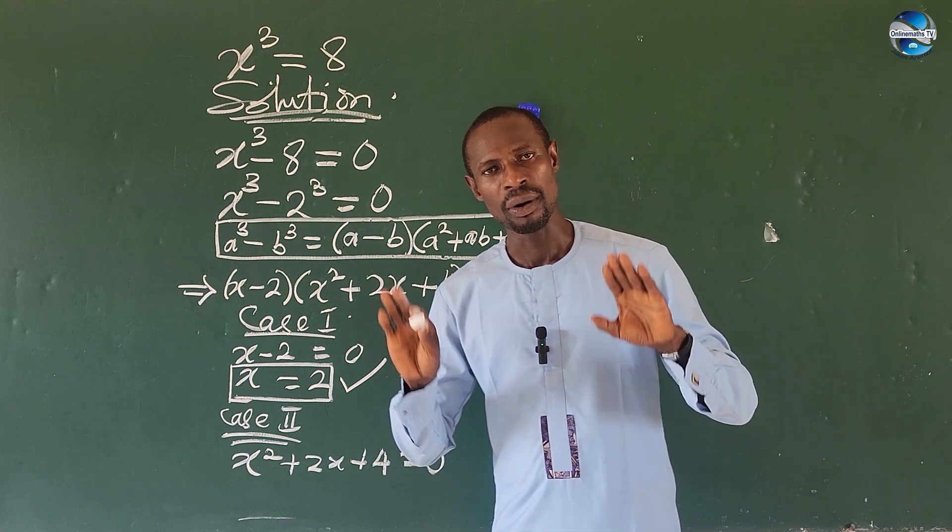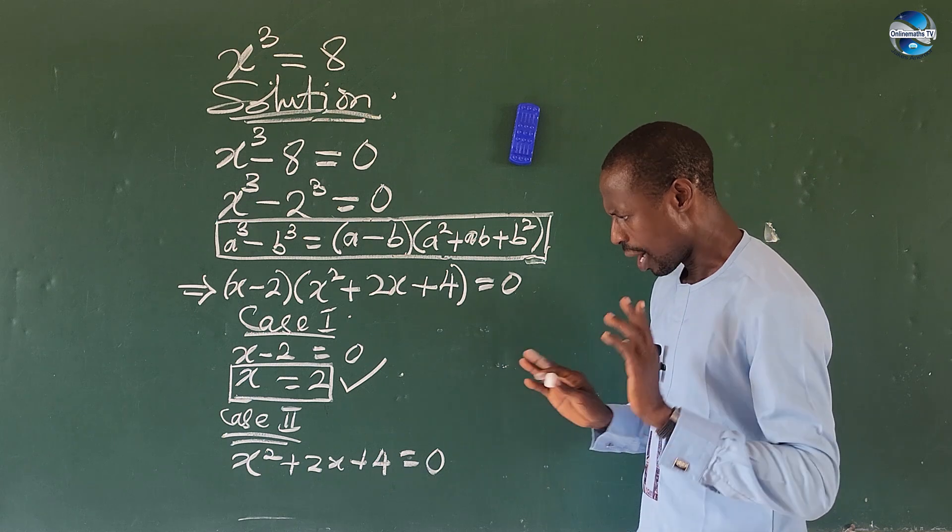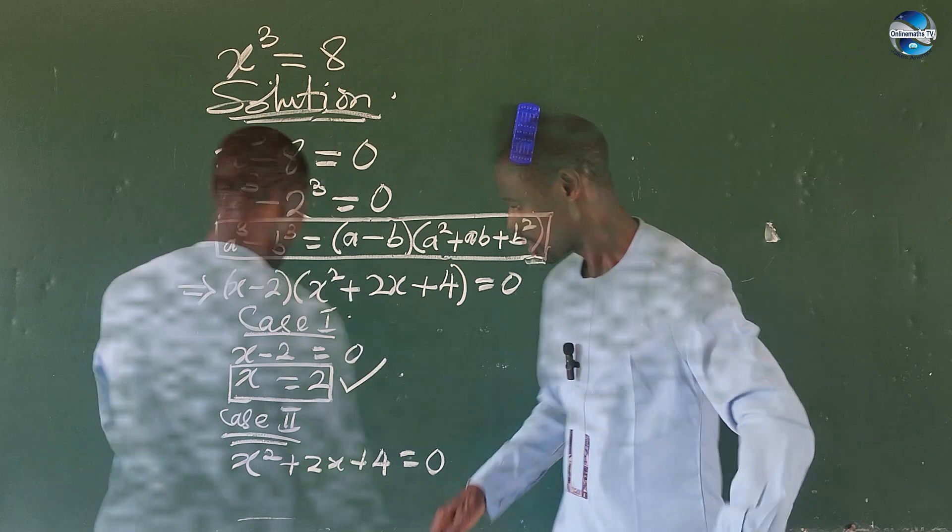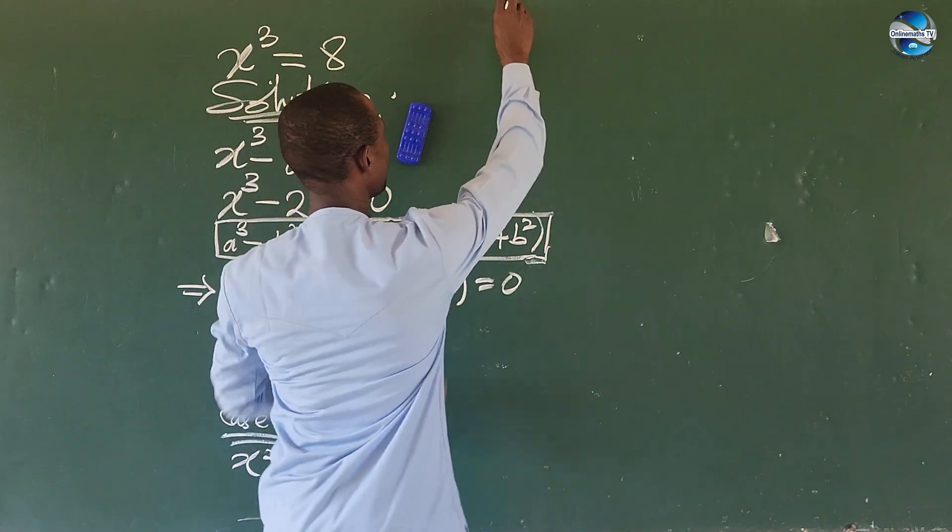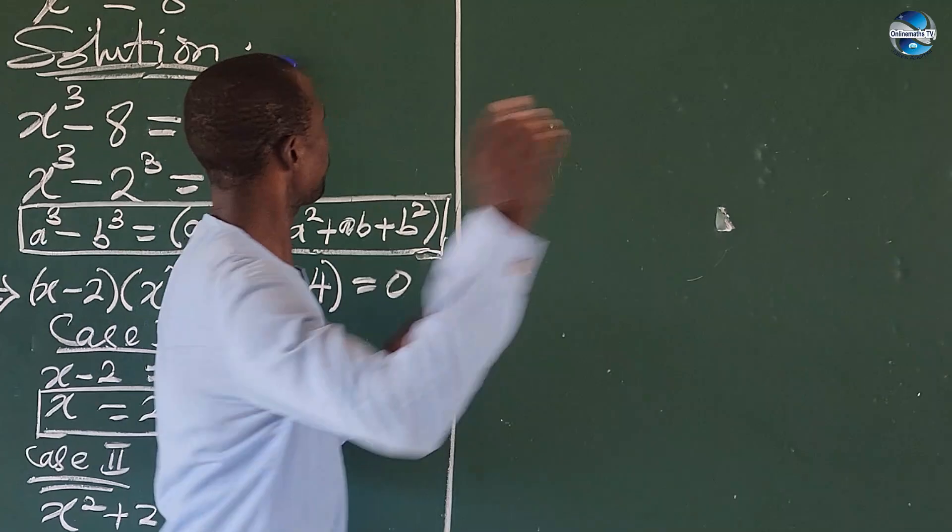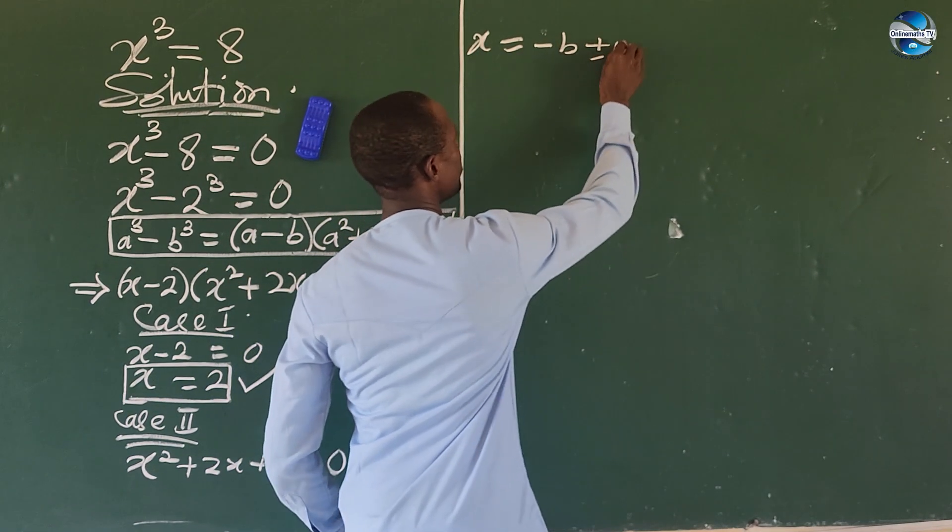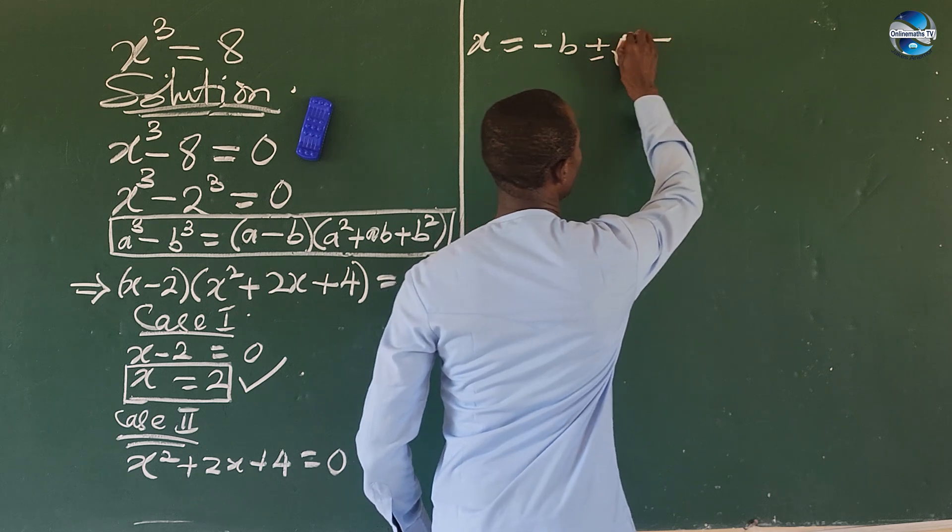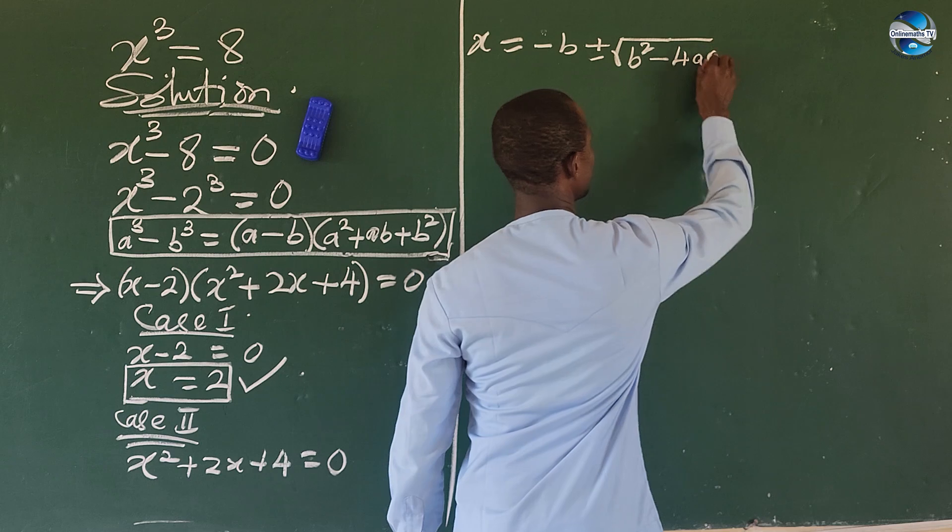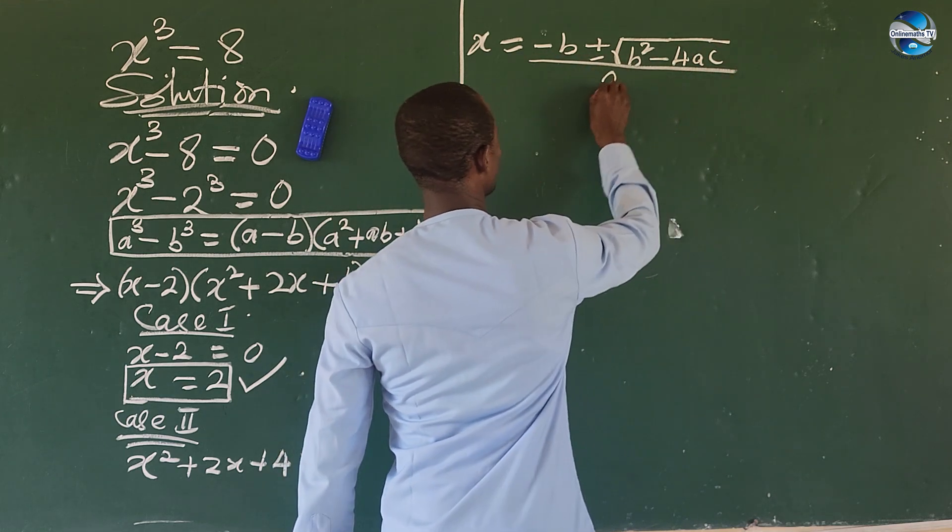So let's go using the quadratic formula. Should we use complete the square method? That might give us some tough time. So let's continue on this side of the board. Our formula says that our x will now be equal to -b ± √(b² - 4ac) all over 2a.